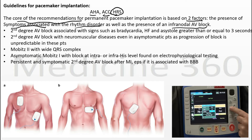For a patient with Mobitz I second degree block who is asymptomatic, we do not insert a permanent pacemaker. But if infranodal AV block is present in Mobitz I, we perform permanent pacemaker implantation, or if the patient is symptomatic. In Mobitz II, whether asymptomatic or symptomatic, we perform permanent pacemaker implantation.